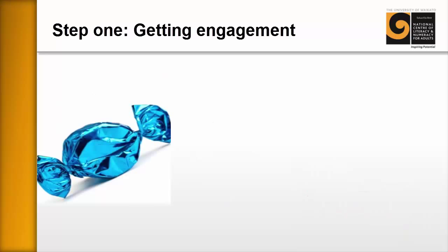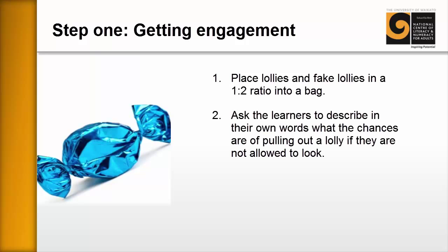Now it's essential that you get engagement early on. And one way that I've done this is simply to get some old lolly wrappers and wrap up some fake paper within those and place them in a ratio with real lollies of one to two into a bag. So that means out of every three lollies, one of them is real and two of them are fake. And then simply you ask the learners to describe what the chances are of pulling out a lolly and get them to put it in their own words and see what they come up with.